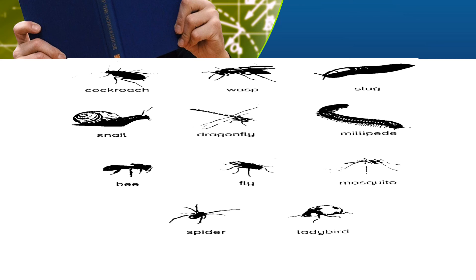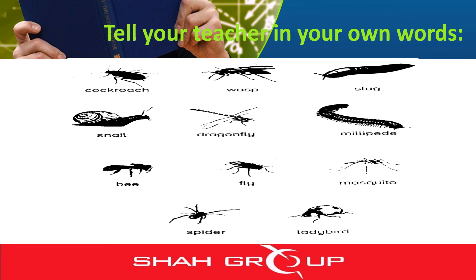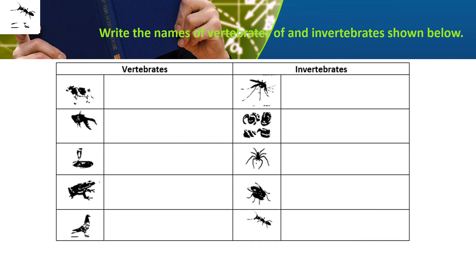Examples include: cockroach, wasp, slug, millipede, black fly, snail, bee, fly, mosquito, spider, ladybird, and shark. There is a mosquito and a spider here — these are called invertebrates.